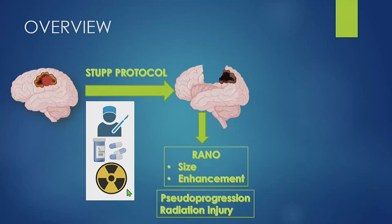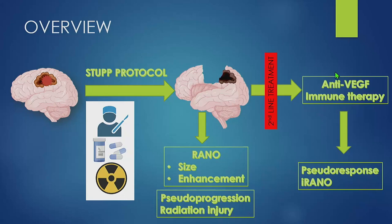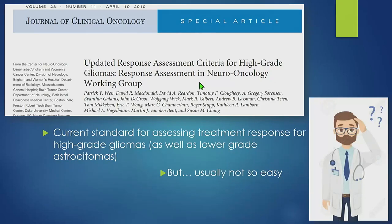Radiation injury can actually be seen throughout all stages of the process. If the patient has a relapse or recurrence, they go to second-line treatments, which consist basically of anti-angiogenic therapy, anti-VEGF, and immunotherapy — we are in the new era of the explosion of immunotherapy. Linked to these new therapies, we can have the pseudoresponse, and the RANO criteria are changed to the iRANO criteria. In 2010, the Journal of Clinical Oncology published the RANO criteria — response assessment in neuro-oncology — which is the current standard for assessing treatment response for high-grade gliomas, as well as lower-grade gliomas and astrocytomas. But this is usually not so easy.